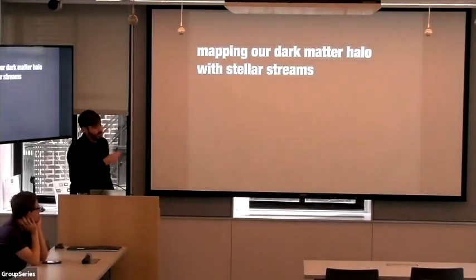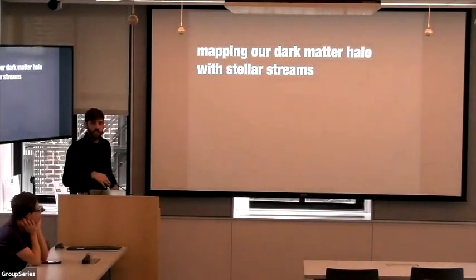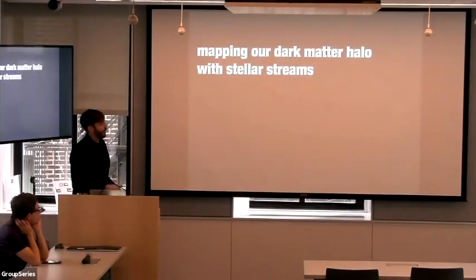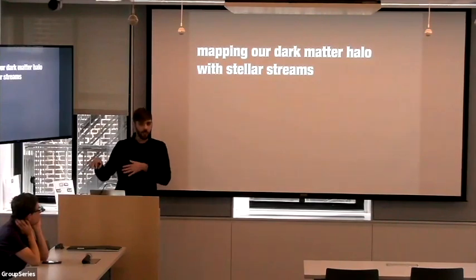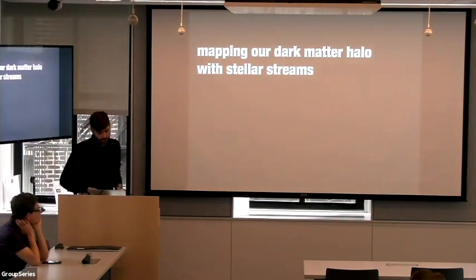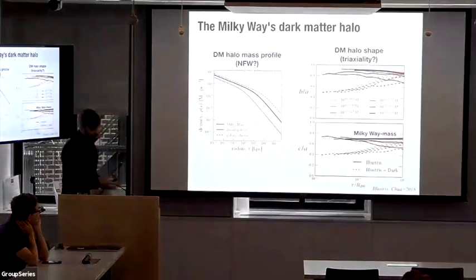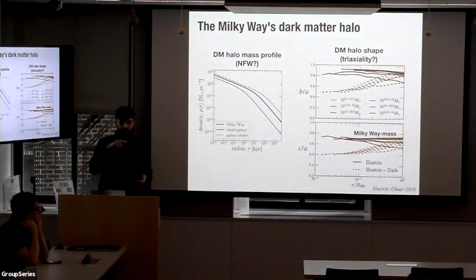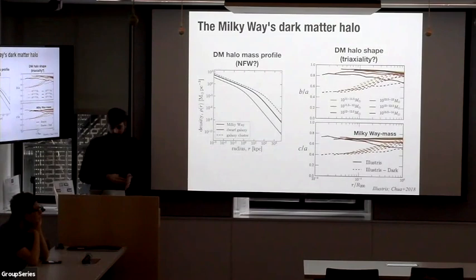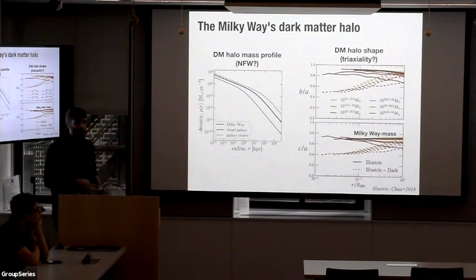Now I'm going to focus on each of those goals in a bit more detail — focusing more on this first topic but touching on substructure and accretion history as well. I think one of the main drivers of galactic dynamics, at least with a capital G, is to measure the global shape and properties of the Milky Way's dark matter distribution.